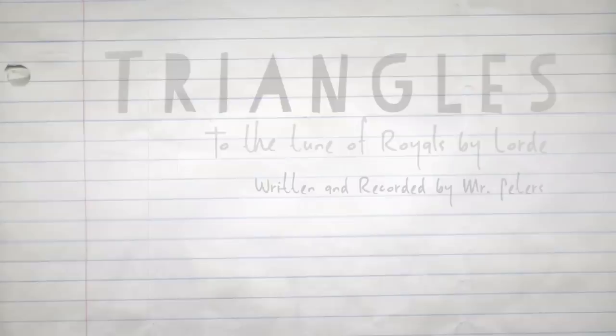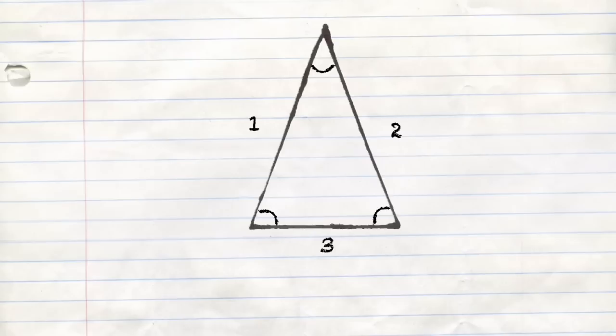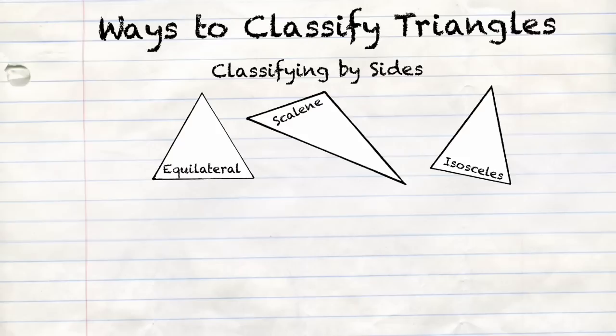A triangle has three sides, the angles inside add up to 180. There are ways to classify them by their sides and the angles inside.